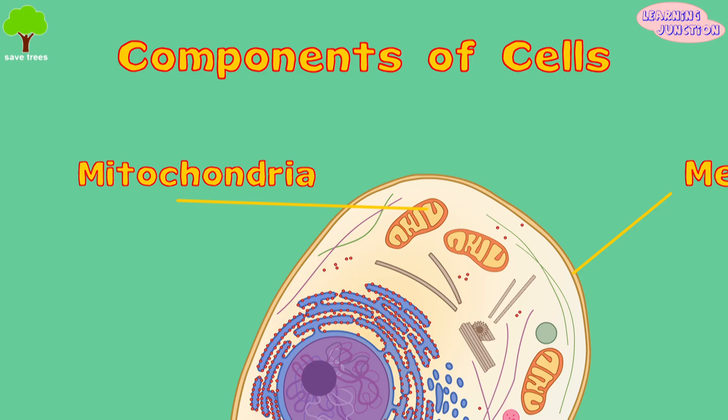The cell gets energy from the mitochondria. In the human body, food we have digested reacts with oxygen in the mitochondria to make energy for the cell.